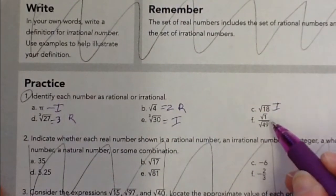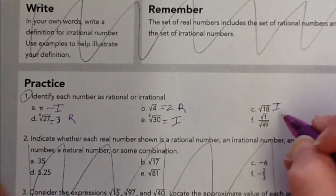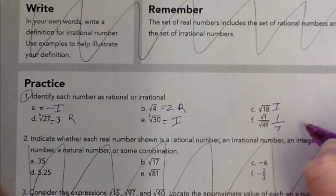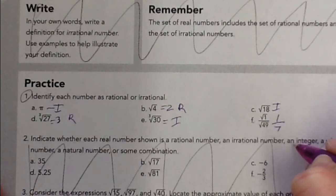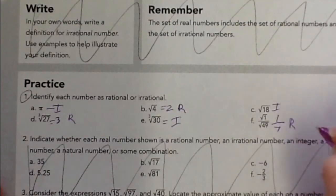And then f looks a little wonky, square root of 1 over the square root of 49. So deal with top and bottom separately. Square root of 1 is 1. Square root of 49 is 7. So this is just 1 over 7. And remember, rational numbers are anything that can be represented as a fraction. So that's rational.